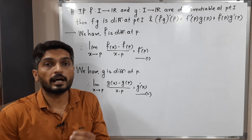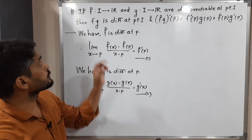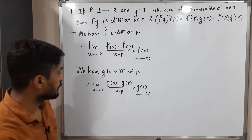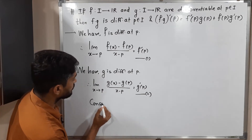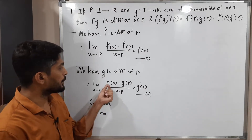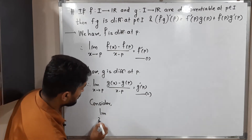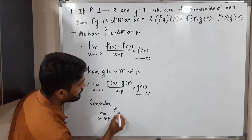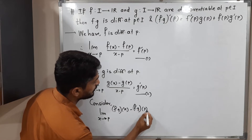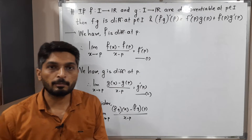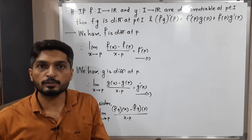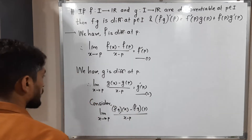Now let us come to the target. Our objective is to prove that f into g is also differentiable. To prove this, we use the same definition. We consider: limit x tends to p of [f·g(x) minus f·g(p)] upon [x minus p]. Our ultimate aim is to prove that this limit exists — if it does, we can declare the function is differentiable.